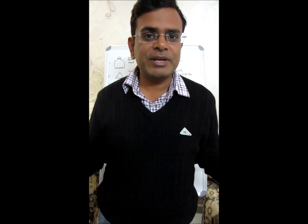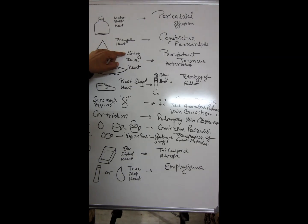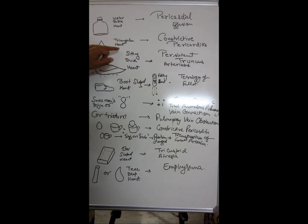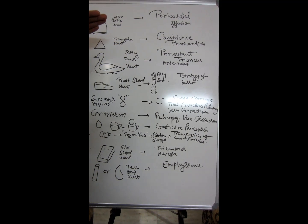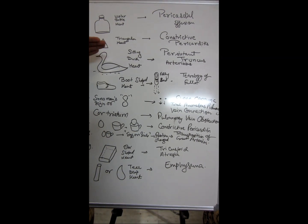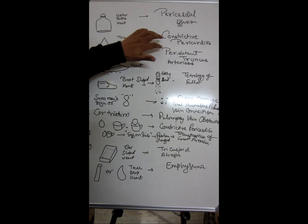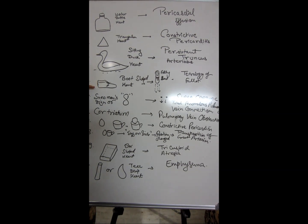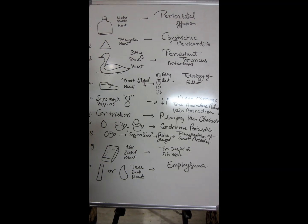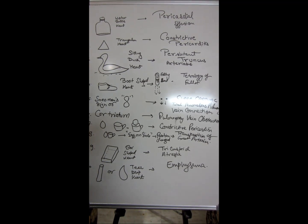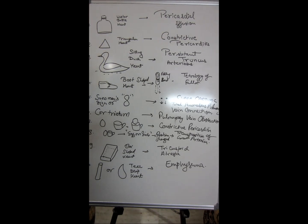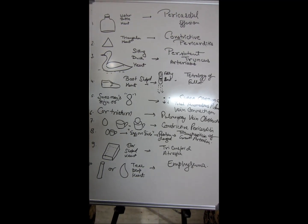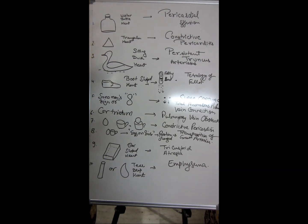Now, sitting duck heart - you can remember it as if a duck is sitting with the trunk, so persistent truncus arteriosus. Another is the boot shaped heart which you see in the x-ray. Remember it as falling boot in your mind, so remember from fall - that is tetralogy of Fallot.